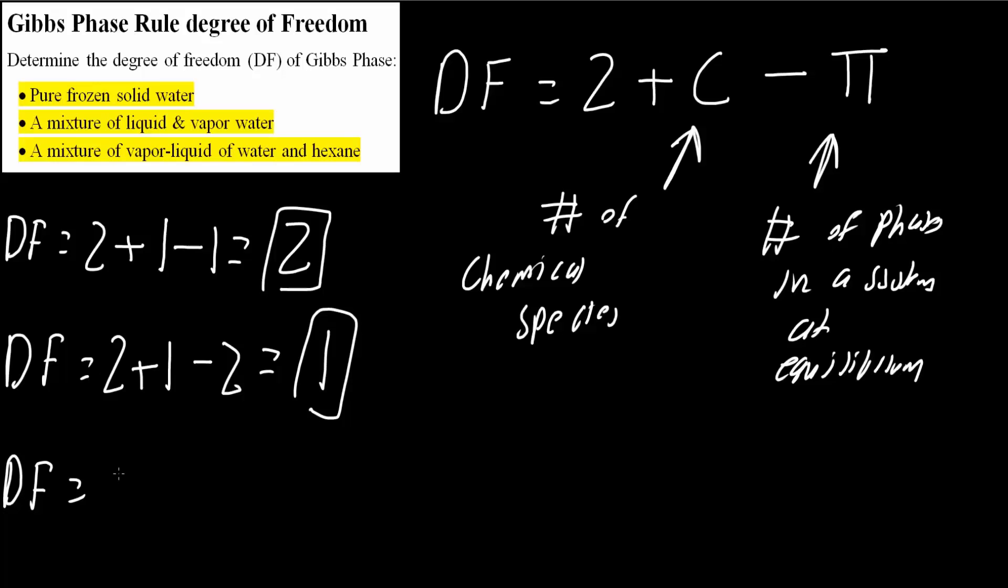Finally, the third one. A mixture of vapor, liquid water, and hexane: DF = 2 + 2 - 2. We're dealing with both water and hexane, so the number of chemical species is 2. We have liquid and vapor phases, so minus 2. We get DF = 2. That's all we need to do for this problem.